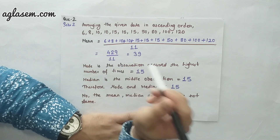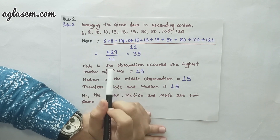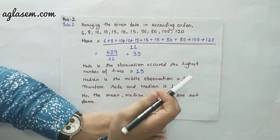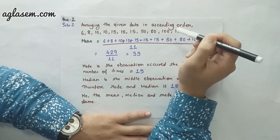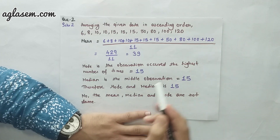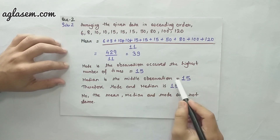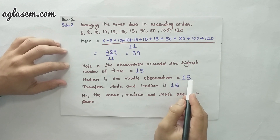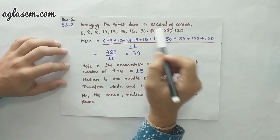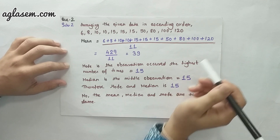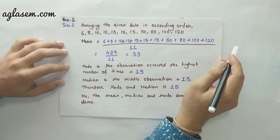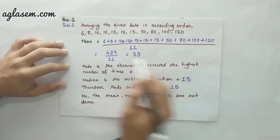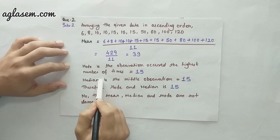Now let's find the mode of this question. The mode is the observation occurring the highest number of times, which is 15, because 15 is the number repeated three times in this series. Now let's find the median. The median is the middle observation — the number which divides the series into two equal parts — and in this data the median is also 15.